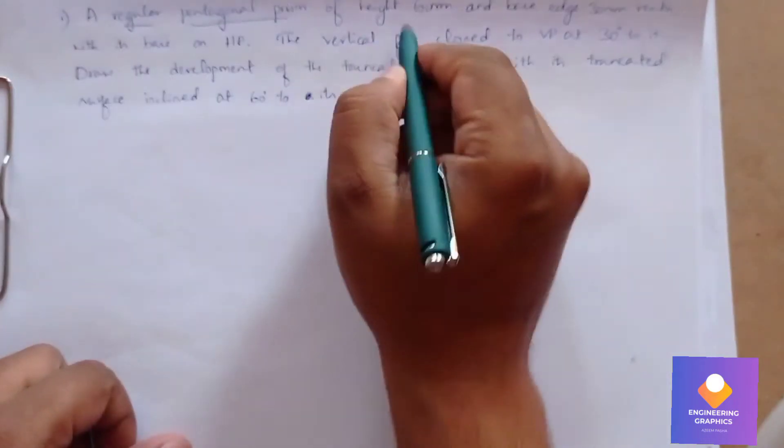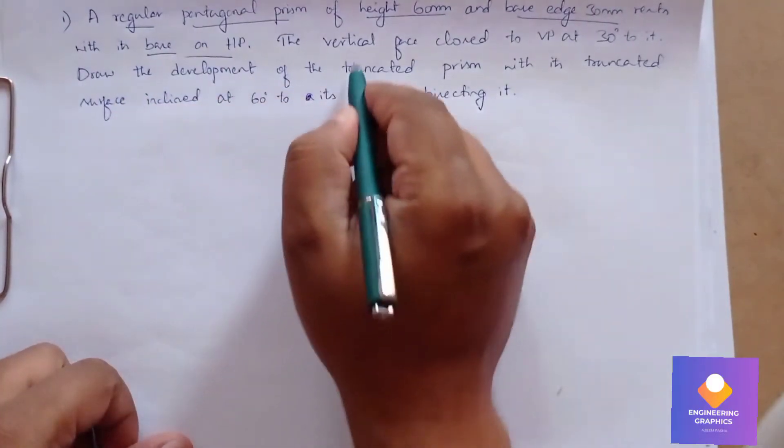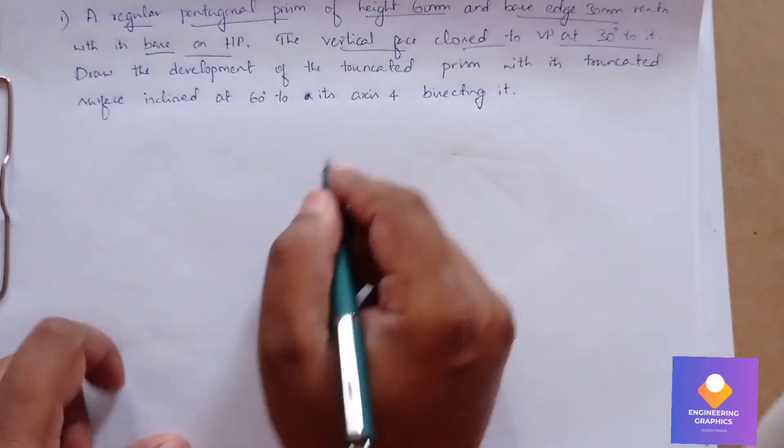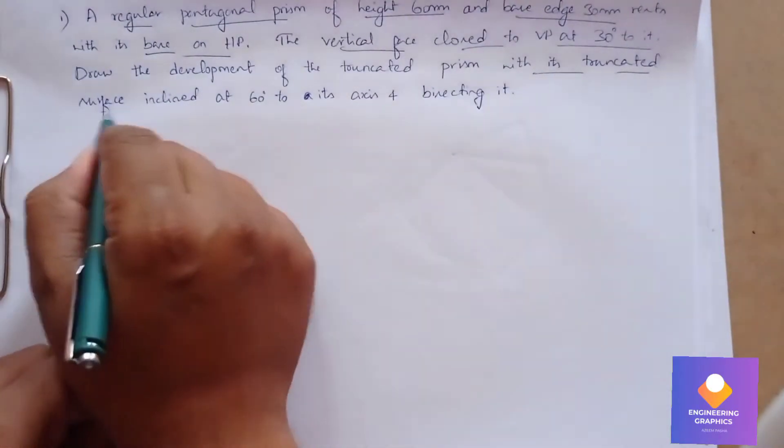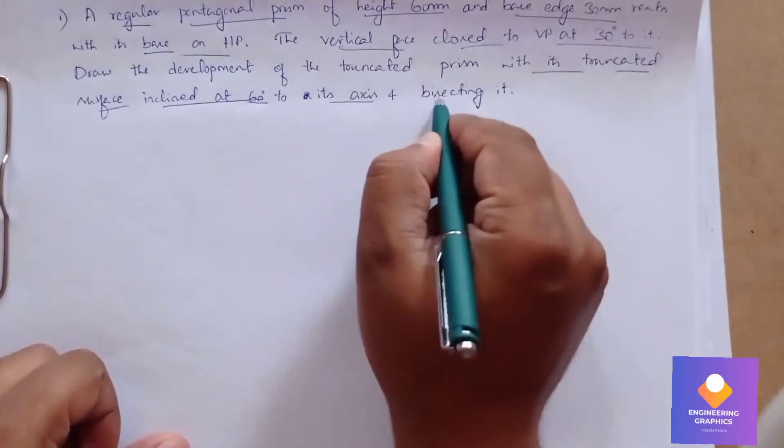A regular pentagonal prism of height 60mm and base edge 30mm rests on HP with a vertical face close to VP, inclined at 30 degrees to VP. Draw the development of the truncated prism with its truncated surface inclined at 60 degrees to its axis and bisecting it.